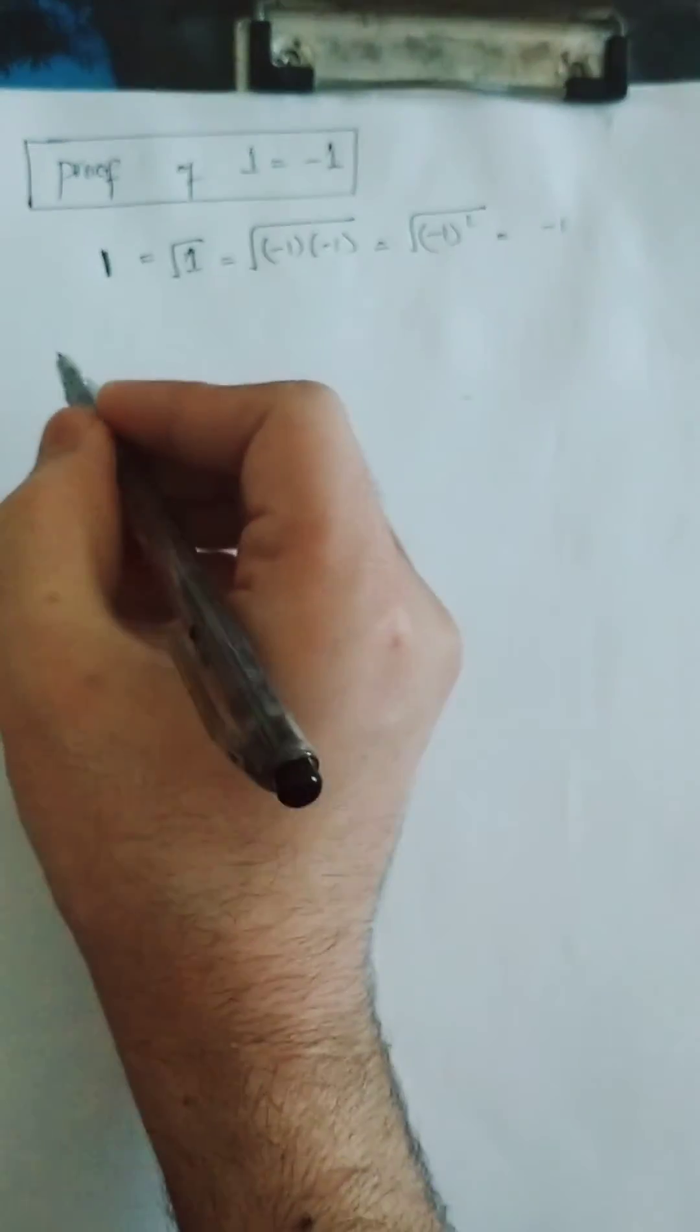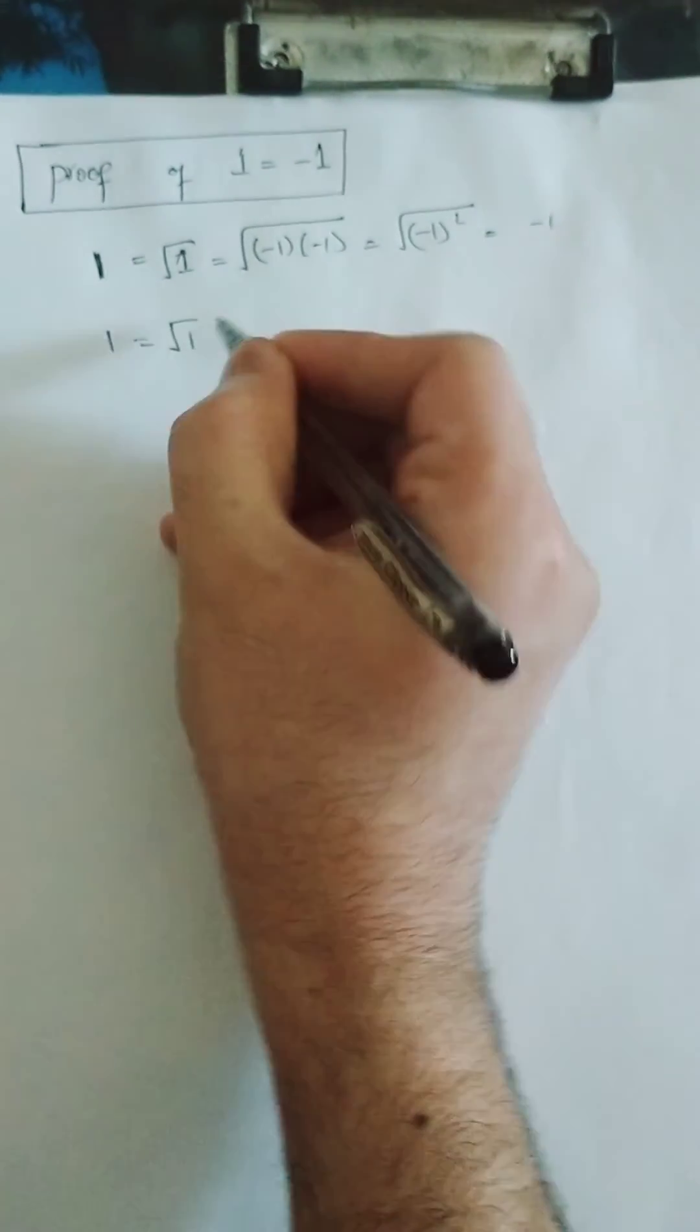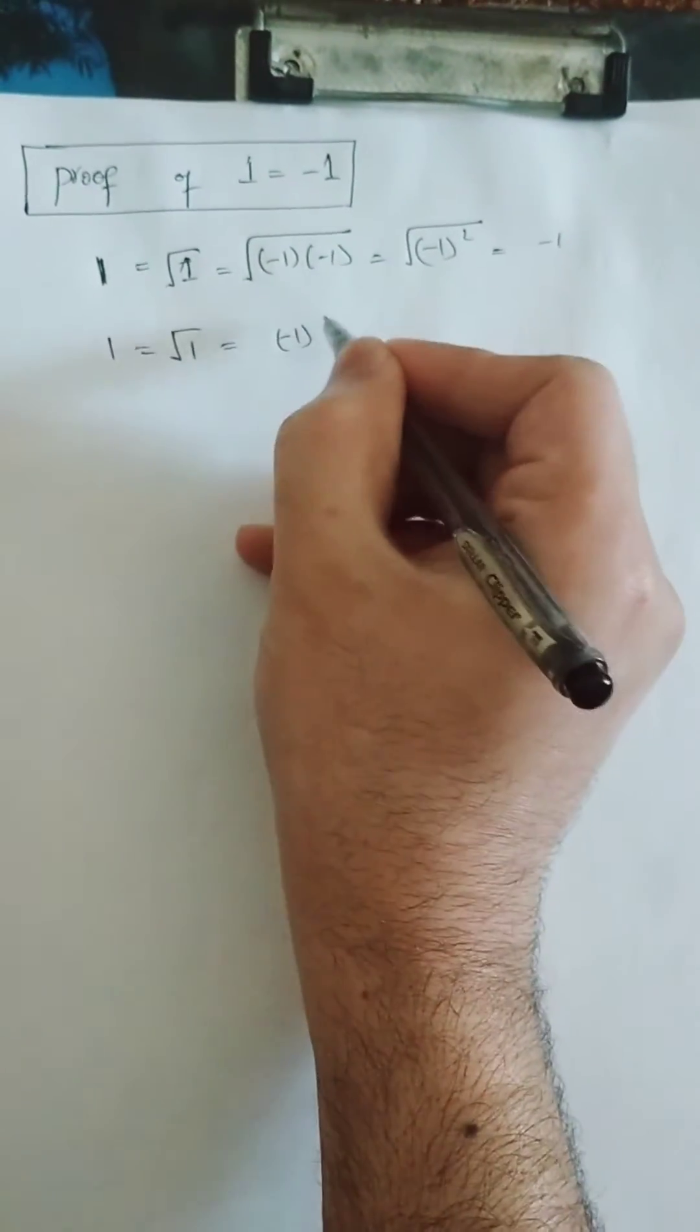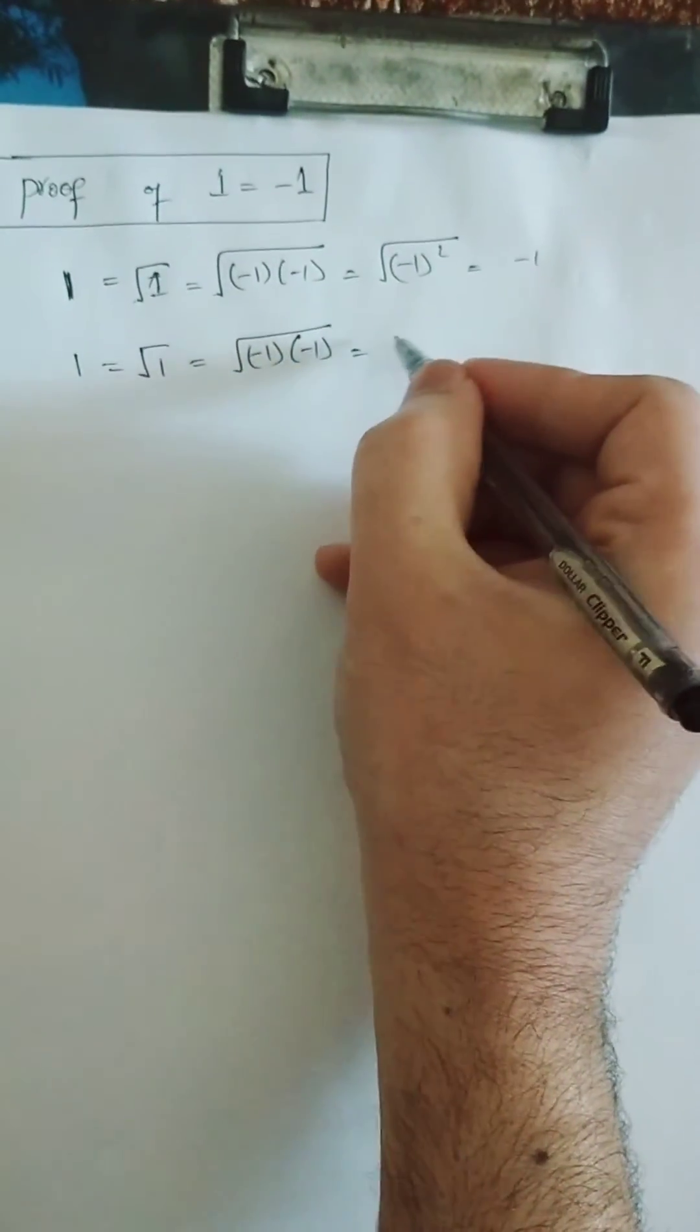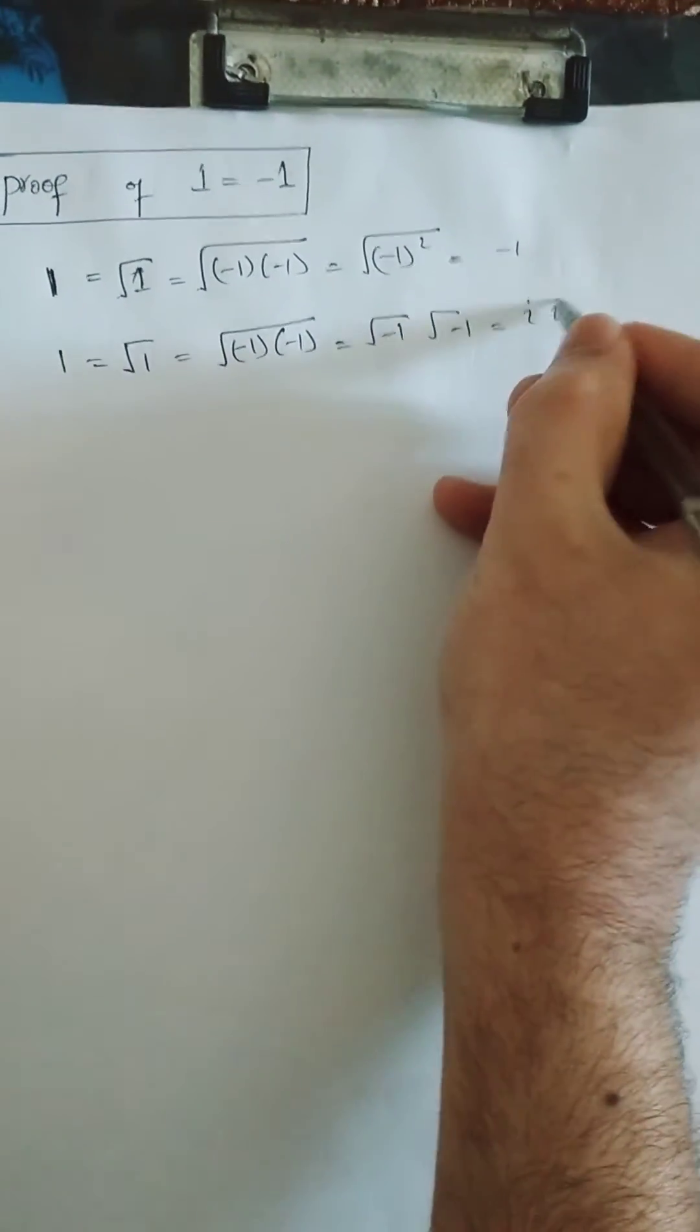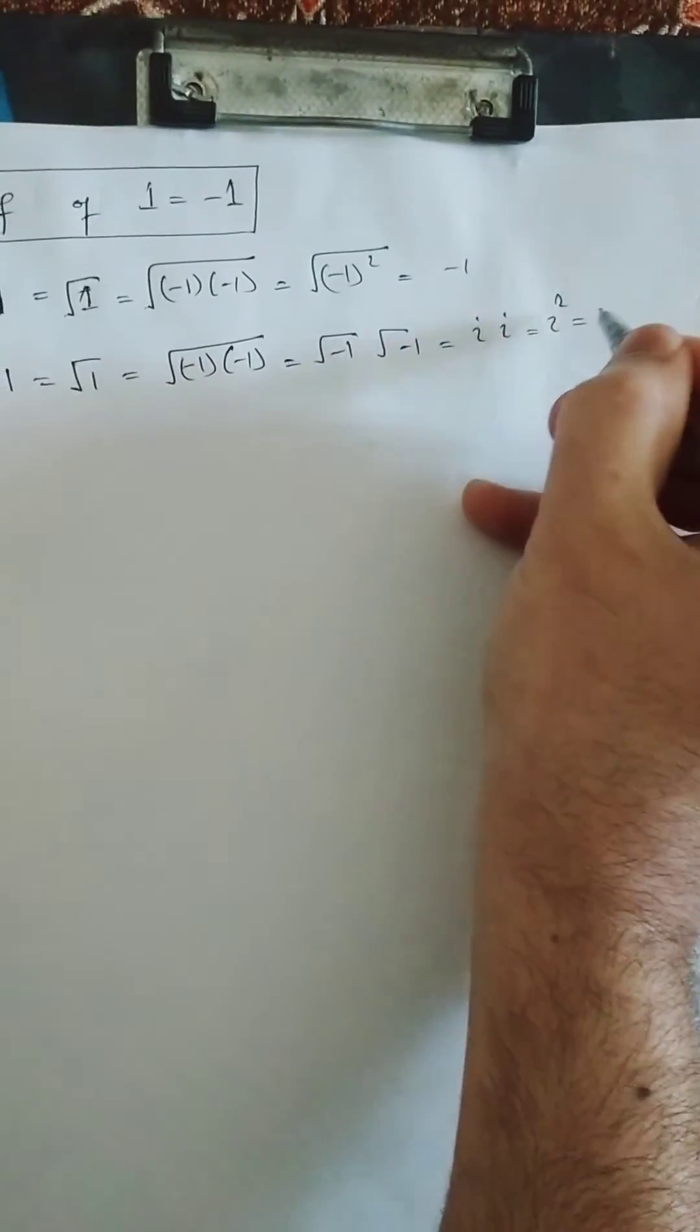Or I can write this another way: 1 is equal to under root 1. Look at this proof again. This 1 I can write as minus 1 into minus 1 under root. And this under root you can split as under root into under root. When you split it, this becomes iota into iota, which is iota square, and iota square equals minus 1.